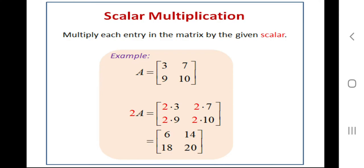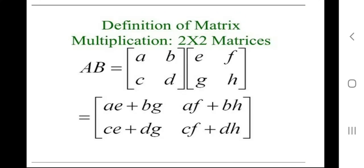We continue multiplying 2 by 9 and 2 by 10. After multiplying, we get the resulting 2×2 matrix with entries 6, 14, 18, and 20. So any number multiplied with a matrix will multiply with each element of that matrix.